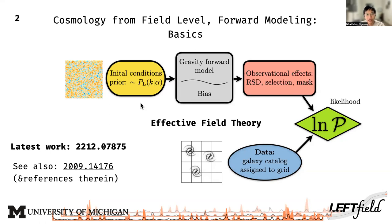We then evolve this initial condition forward to the effective redshift of observation — hence the name forward modeling. In LFT-field, the gravitational evolution of matter and galaxies is described by the effective field theory of large-scale structures and biased tracers. Observational effects such as redshift distortion, survey selection function, and galaxy mask are part of the forward model as well. Finally, to extract constraints on cosmological parameters alpha, we require a field-level likelihood to compare and weight individual Fourier modes — that is, individual points on this grid.